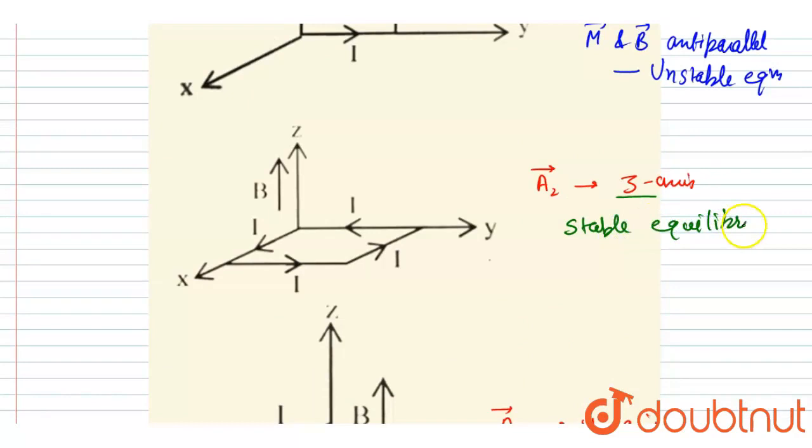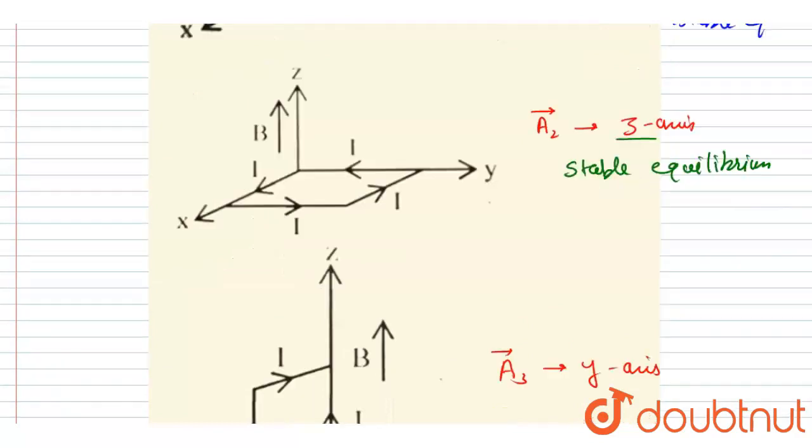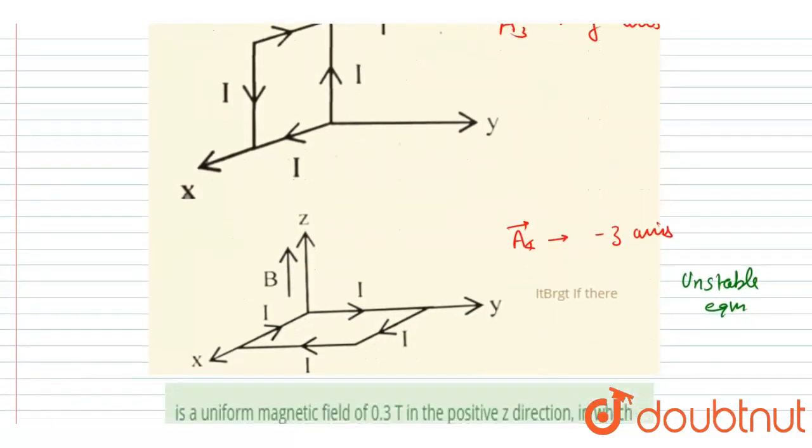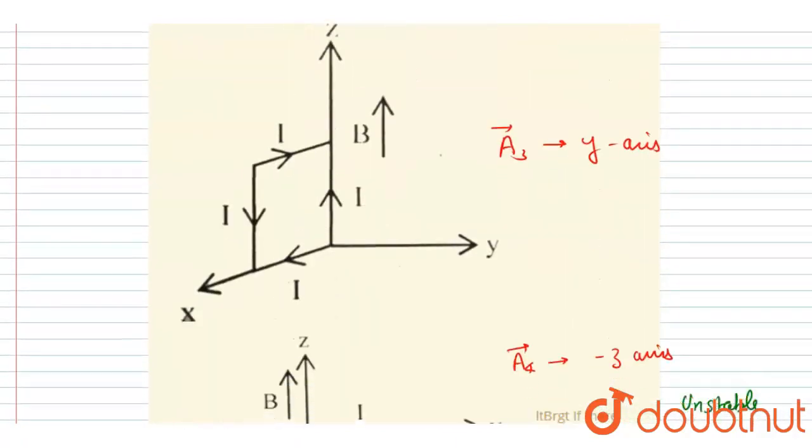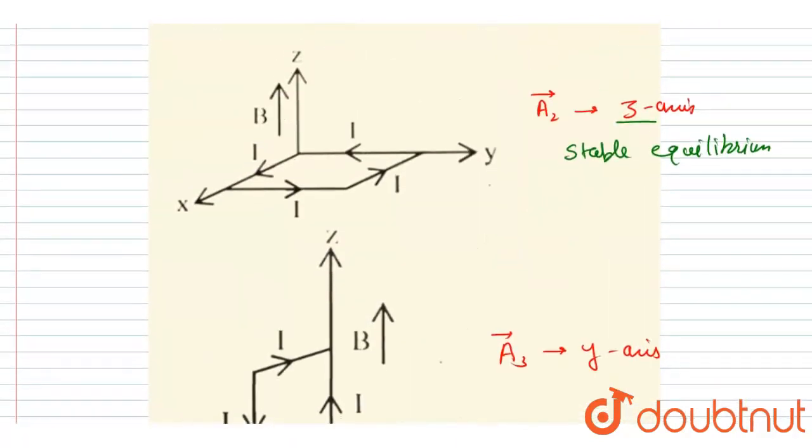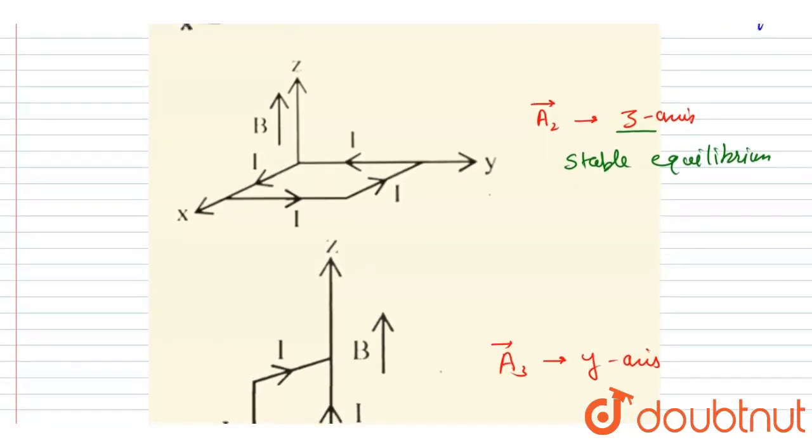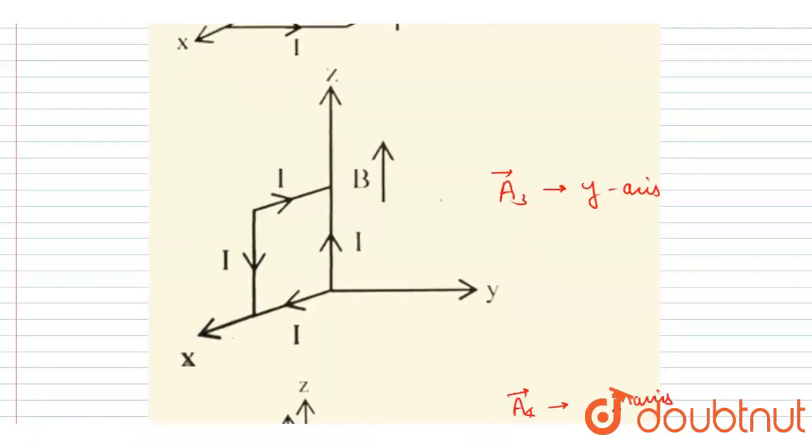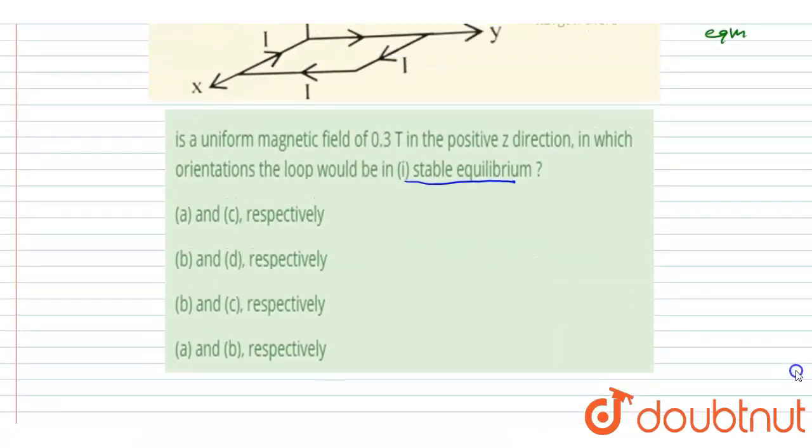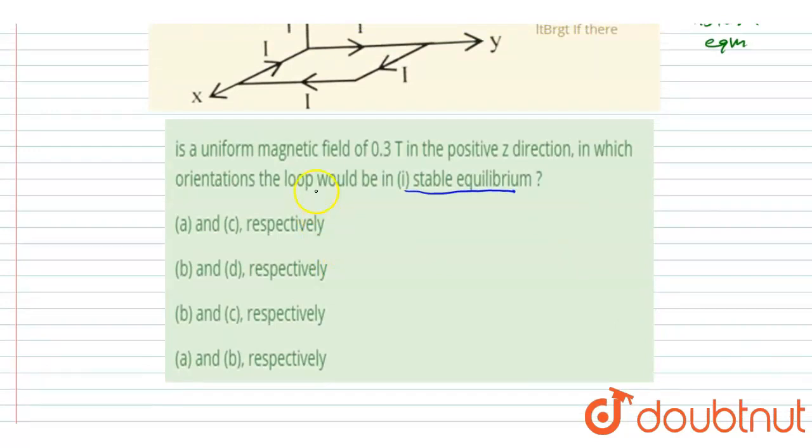As I already told you, the magnetic moment will be directed toward the area vector. So you can see in the second and the fourth diagram, the magnetic field and the magnetic moment are parallel and anti-parallel respectively. In the question it is asked: in which orientation of the loop will it be stable and unstable equilibrium? So I will write B and D respectively. That will be the second option.